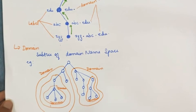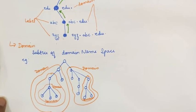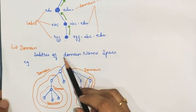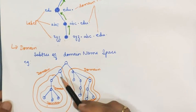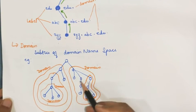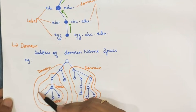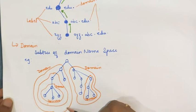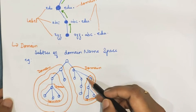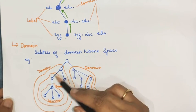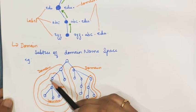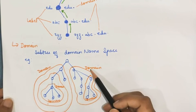Next, a domain is nothing but a part of a tree, or you can say it is a subtree of a domain name space. In this example, you can see the complete hierarchical structure, and we can take sub-parts of that tree — those particular parts are called domains.